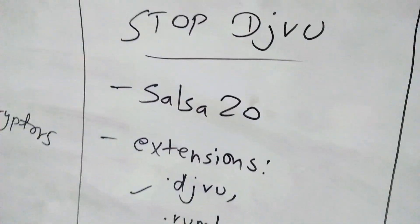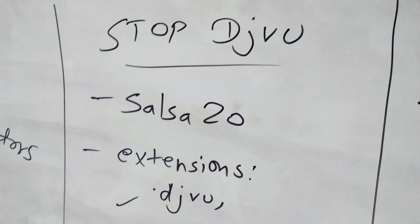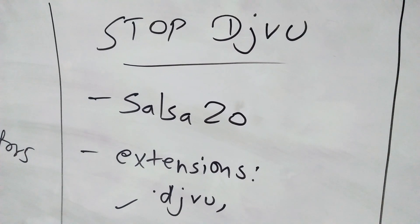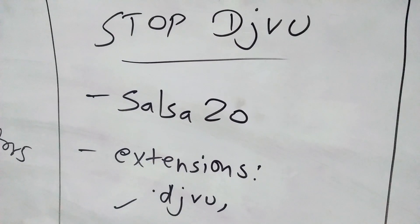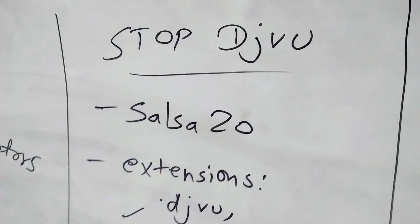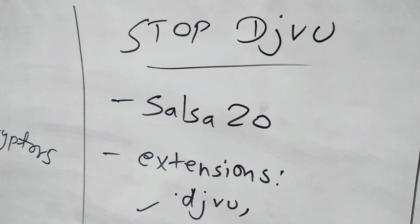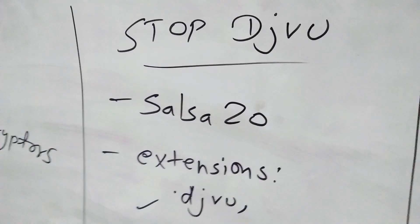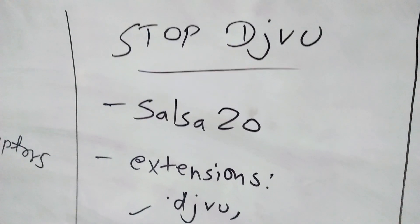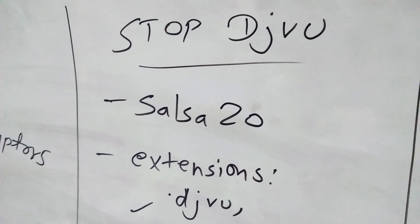In case of Stop Djvu, note that there are limitations on what files can be decrypted with the available decryptors. For all versions of Stop Djvu, files can be successfully decrypted if they were encrypted by an offline key.